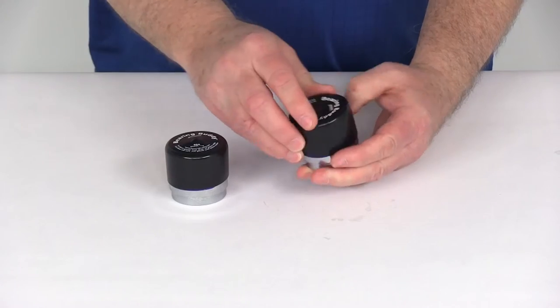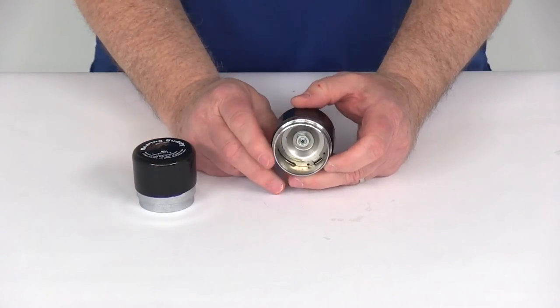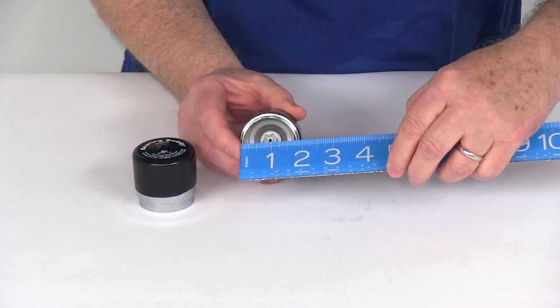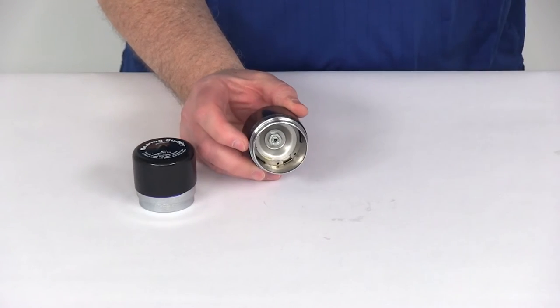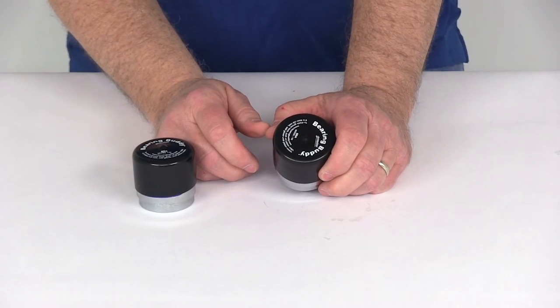It is made in the USA. The specs: it's designed to fit hub bores of 1.810 inches, which is the dimension right here. If we put a ruler on the outer edge to outer edge, you can see it's 1.810 inches, and it's designed to work with the LM-12749 outer bearings.